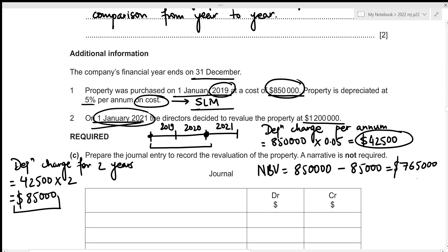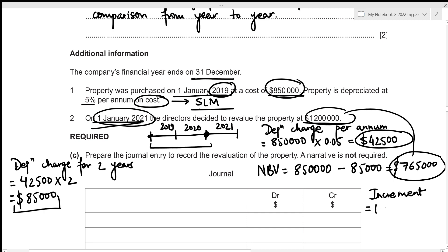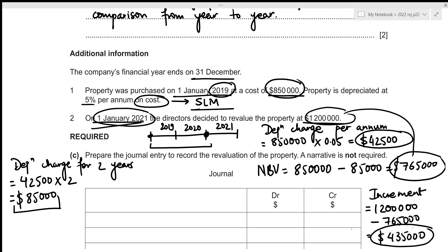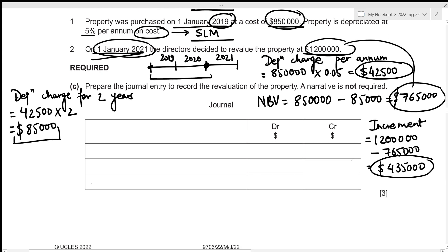Comparing this to the revalued amount of $1,200,000, this is clearly an upward revaluation. The increment is the new value minus the net book value: 1,200,000 − 765,000 = $435,000. This is the amount to be recorded in the revaluation reserve, which is part of capital and therefore goes on the credit side — Revaluation Reserve: $435,000 credit.